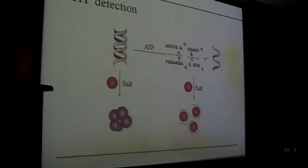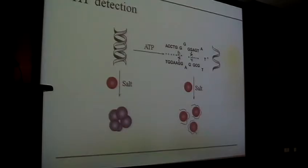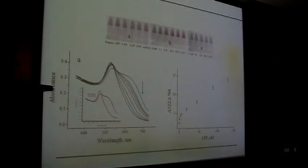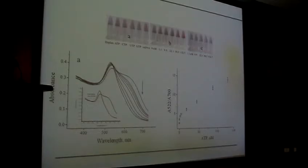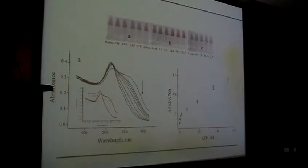With this method we can detect ATP using the ATP aptamer. We first hybridize it with its complementary sequence to form a duplex. If there is a displacement reaction, the released single strand will protect the gold nanoparticles from aggregation and the solution remains red. The data show that in the presence of ATP the solution becomes red, while with ATP analog molecules — CTP, UTP, GTP — it remains blue, confirming the detection is highly specific.